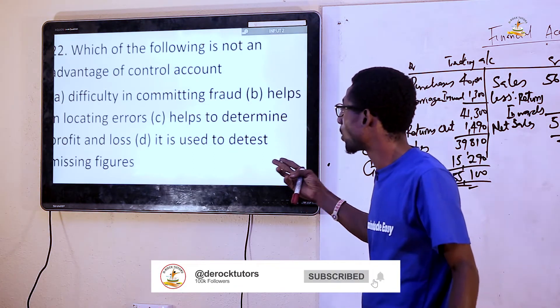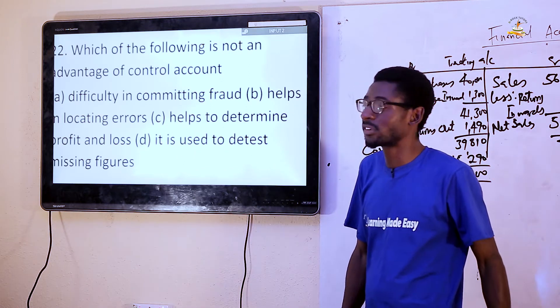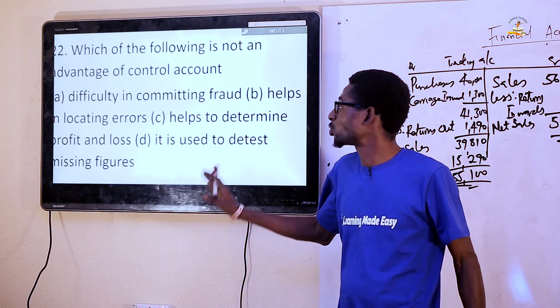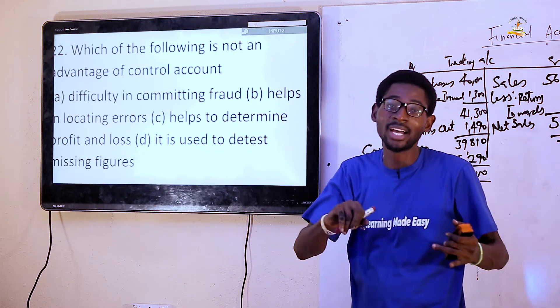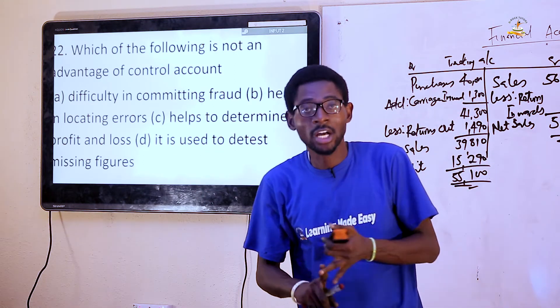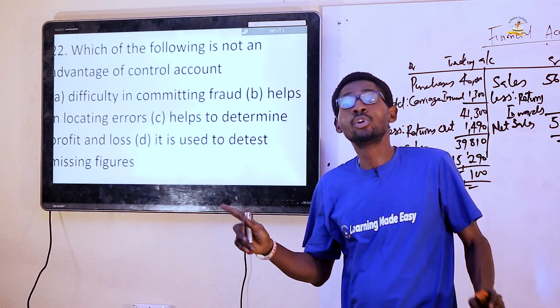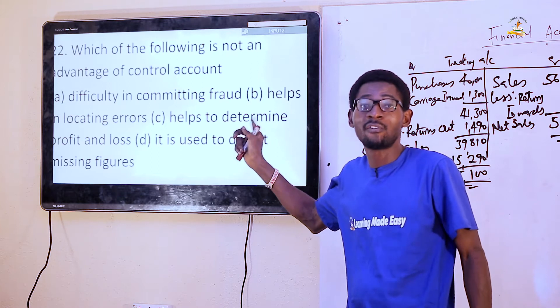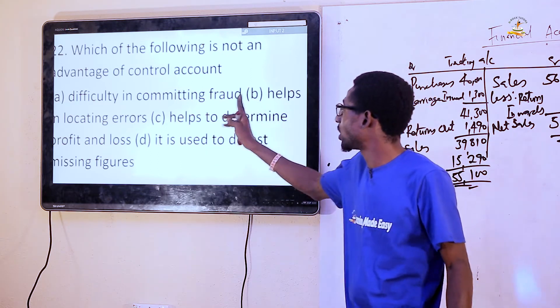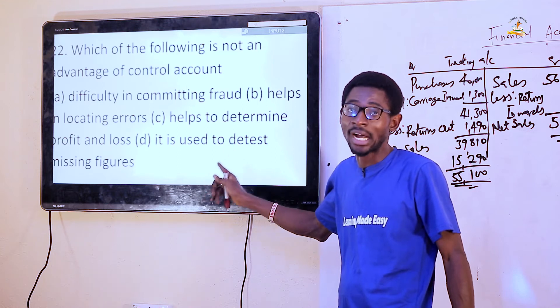The answer is option C — helps to determine profit and loss. Controlled accounts is not used to get profit and loss. It is used to get total credit sales, total credit purchase, total debtors and total creditors. It is also used to get the automatic accuracy of ledger posts. So options A, B, and D are correct advantages of controlled accounts except option C.